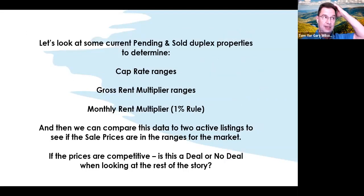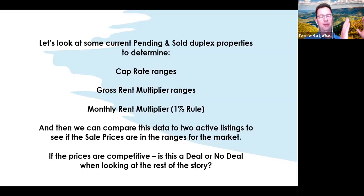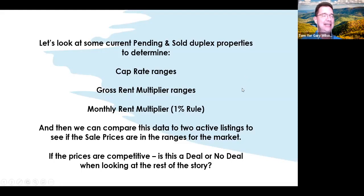We're going to look at some duplexes in the Charlottesville market. I was able to find side-by-side duplexes — comparing apples to apples. I determined the cap rates, the GRMs, and the monthly rent multipliers, and I've got two active listings that are side-by-sides. We're going to look at ranges from prior sales and see if the ranges fit in with the current active listings — basically, are they overpriced, underpriced, or comparably priced, and would this be a deal or no deal?